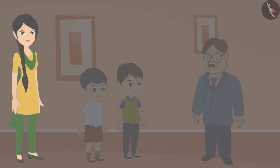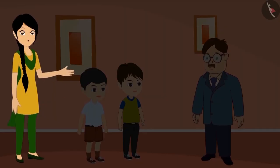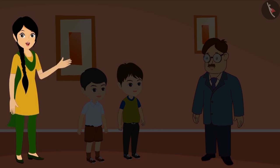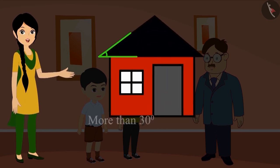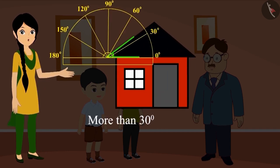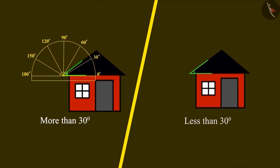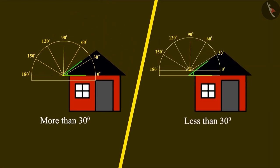Both Golu and Bholu were trying to solve the same question, but their answers were coming different. According to Bholu the measurement of this angle is more than 30 degrees and according to Golu the measurement of this angle is less than 30 degrees.